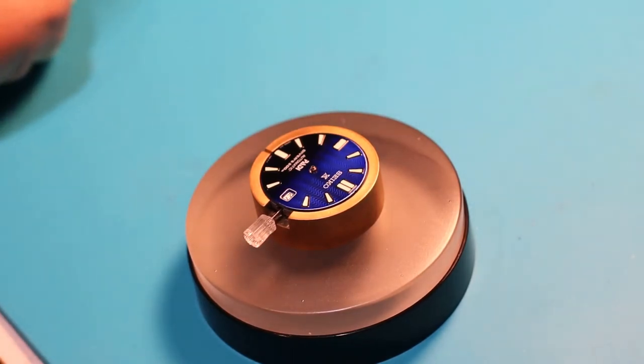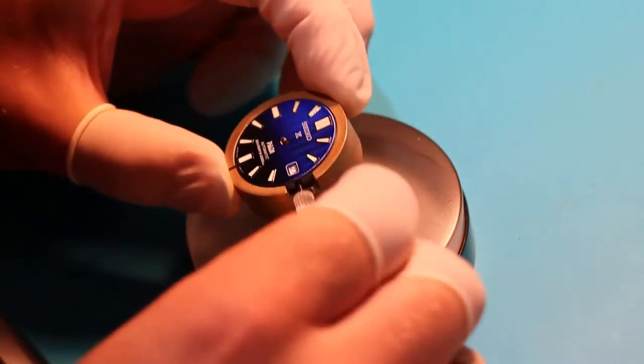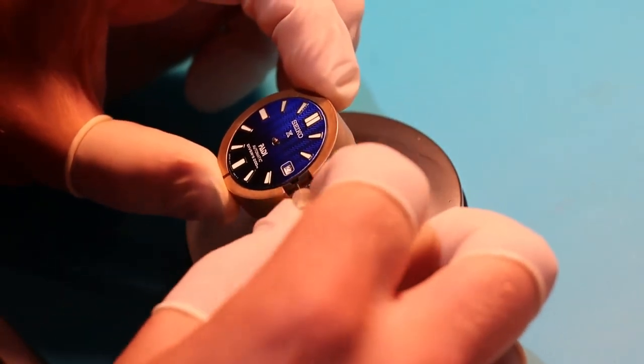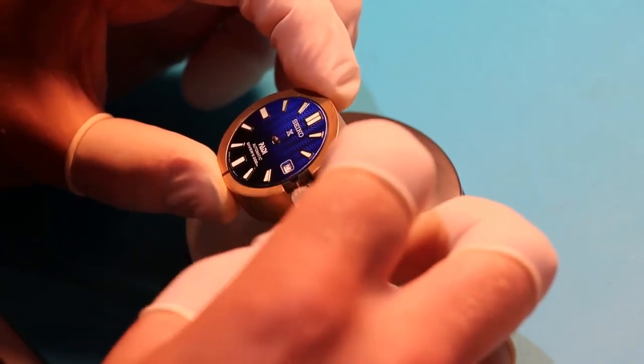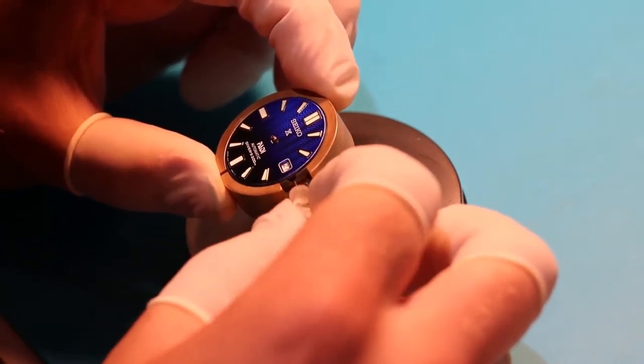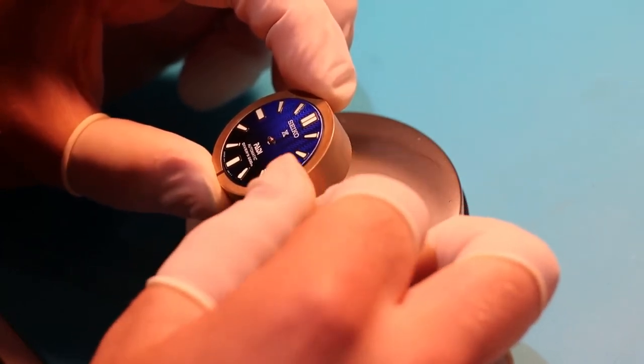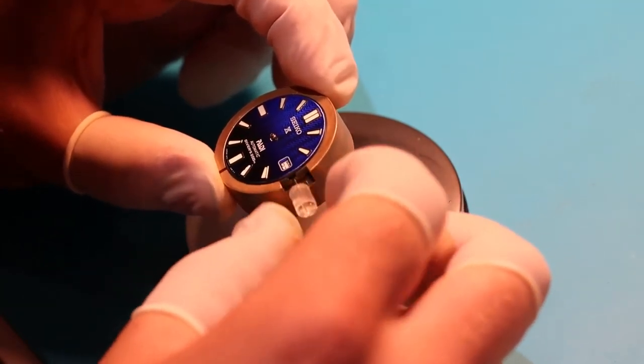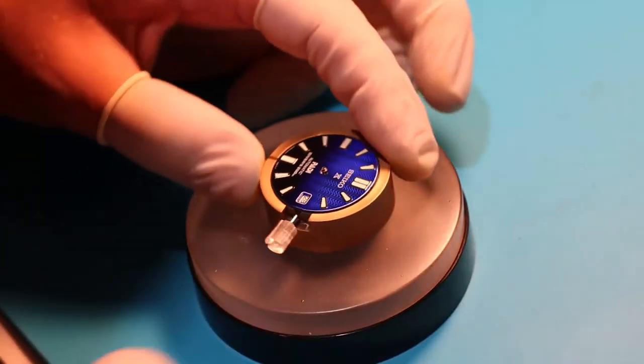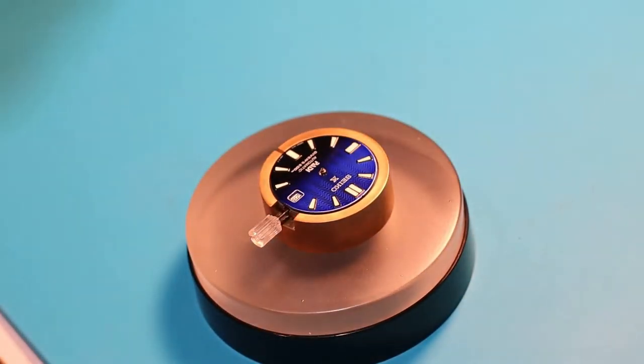And now that the dial is clean, we're going to be starting to install the hands. So just to make sure the movement is set to 12 o'clock midnight, I'm going to be winding it until the date change. And here it comes, and there it is. Now that the date's changed, the movement should be set right at 12 a.m.